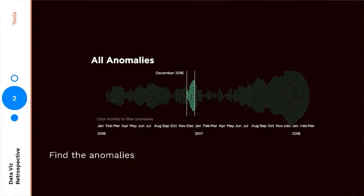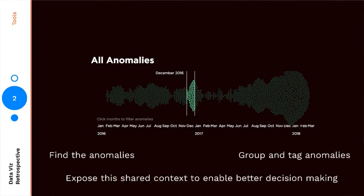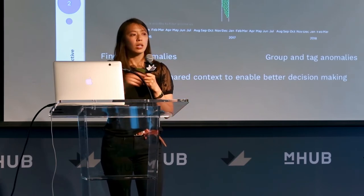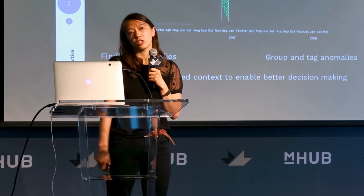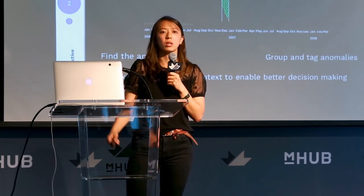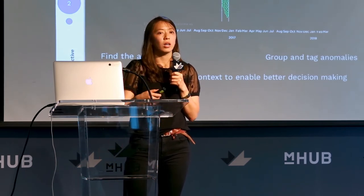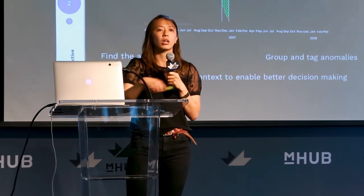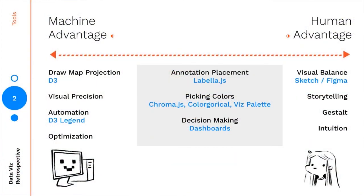The machine advantage side was finding the anomalies; the human advantage side was grouping and tagging those anomalies, then exposing them in dashboards so that people without context would have it shared with them. But this ended up being a huge failure — this product is no longer in use at Netflix because the data gets reloaded quite often due to fraud detection, and asking people to continuously re-tag anomalies they had already tagged simply because data was reloaded was a huge blocker. It wasn't well positioned to optimize for that human advantage side. That's not to say this isn't a valid place to innovate — I actually think it's one of the best places, because I learned so much from that experience.